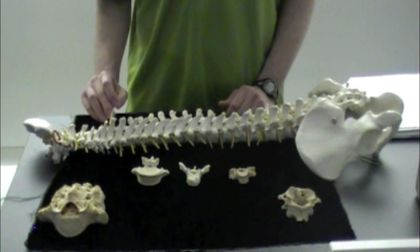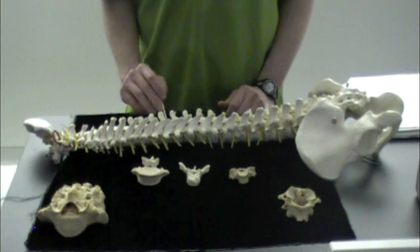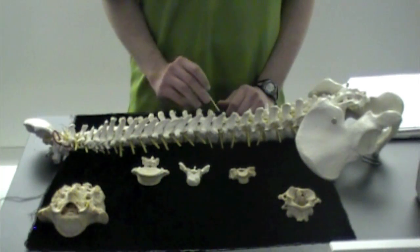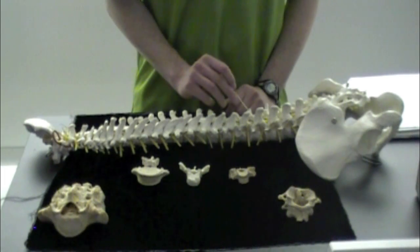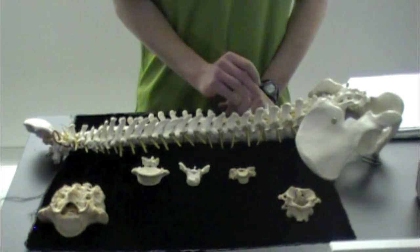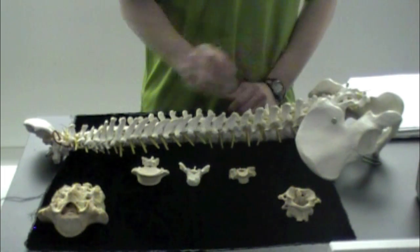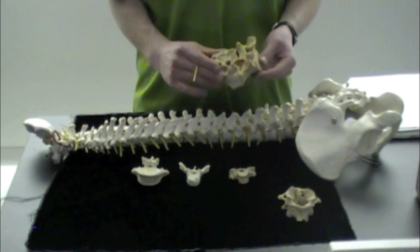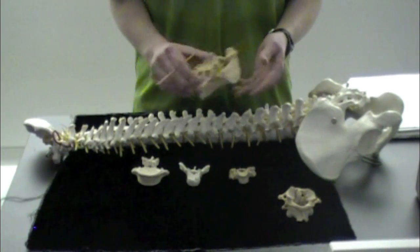After that you have 12 thoracic: 1, 2, 3, 4, 5, 6, 7, 8, 9, 10, 11, 12. And then you have 5 lumbar: 1, 2, 3, 4, 5. And then your sacrum is composed of 5 fused vertebrae.